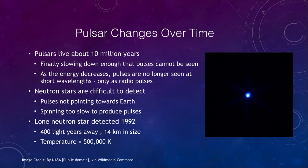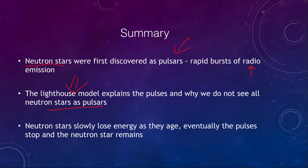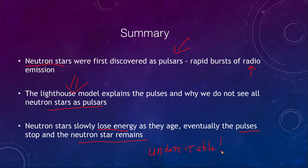To summarize: neutron stars were first discovered as pulsars giving off rapid bursts of radio emission. We can use the lighthouse model to explain the pulses and why we do not see all neutron stars as pulsars — some are simply not pointing in the correct direction. Neutron stars will slowly lose energy as they age, and eventually the pulses will stop, but the neutron star will remain behind, mostly undetectable. That finishes our lecture on neutron stars and pulsars. We'll be back again next time for another topic in astronomy — have a great day, everyone.